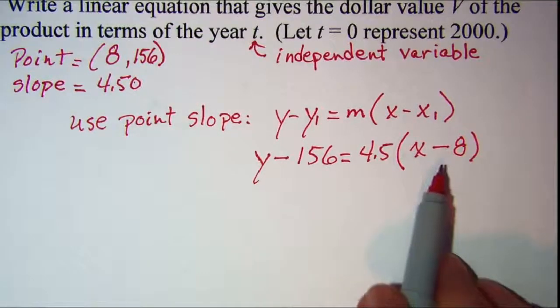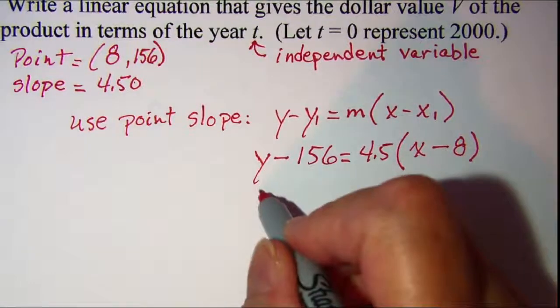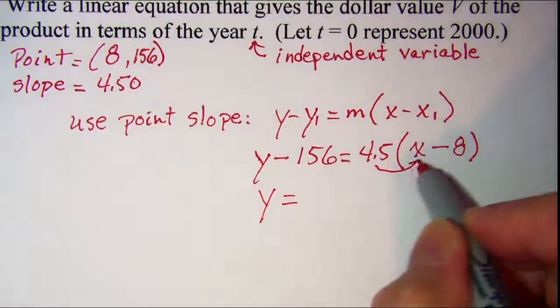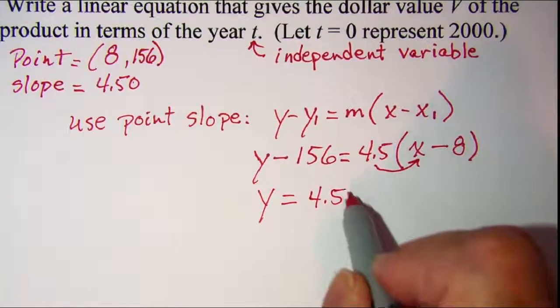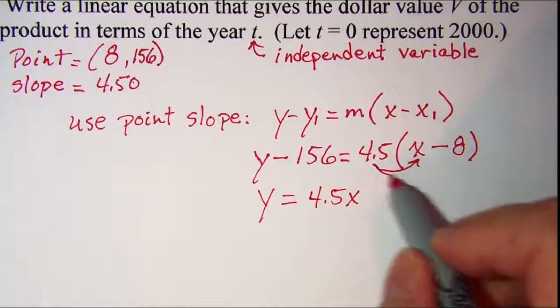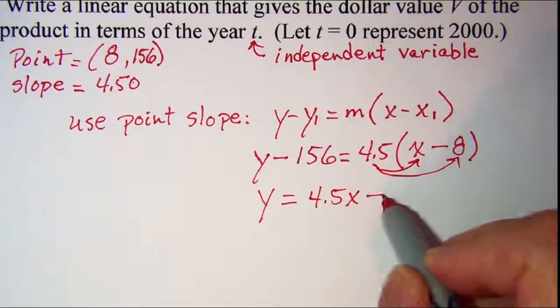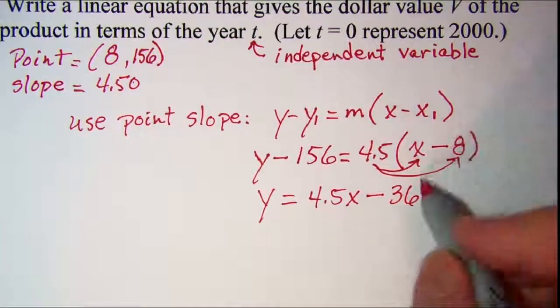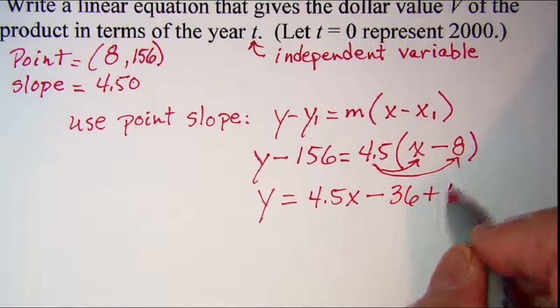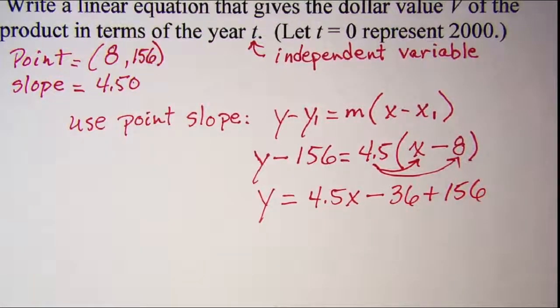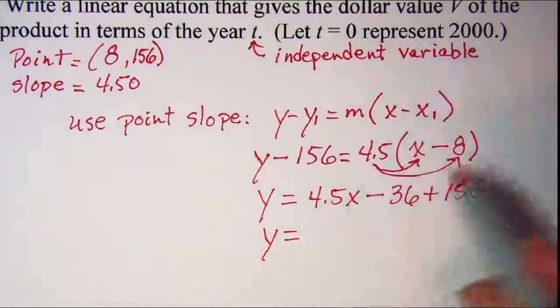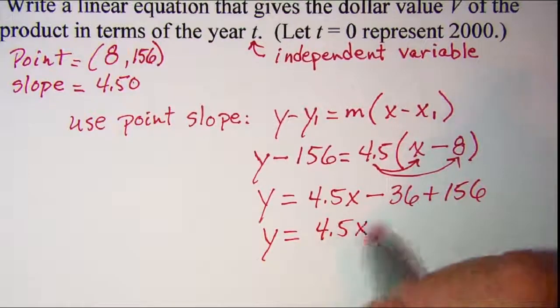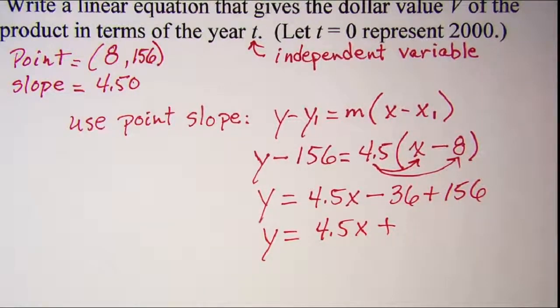Now I just need to simplify this equation a little bit. I have y equals, let me distribute here, 4.5x and then here be minus 36, and then I'm going to add the 156 over as well. And we have y is equal to 4.5x and then plus 120.